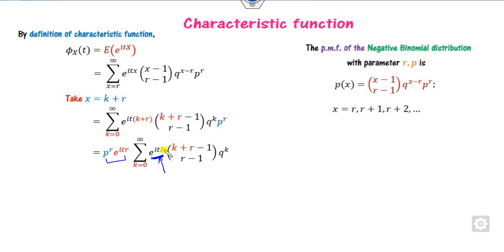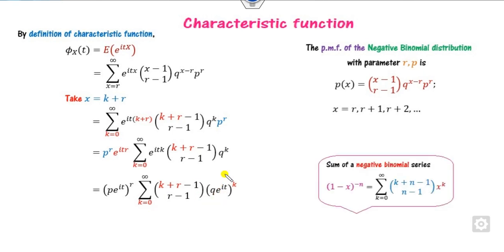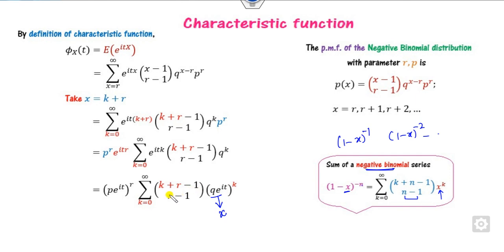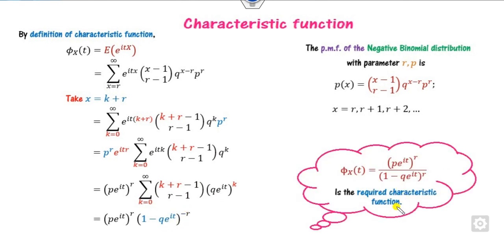This part is with respect to power k, and this part is also with respect to power k, so you can combine them. This gives an infinite series. The sum of this infinite series is the sum of the negative binomial series. In general, the expansion is of this form. Here x in the general formula corresponds to the combined base term, and n corresponds to r. So this can be written in the required closed form — this is the characteristic function of the negative binomial distribution.